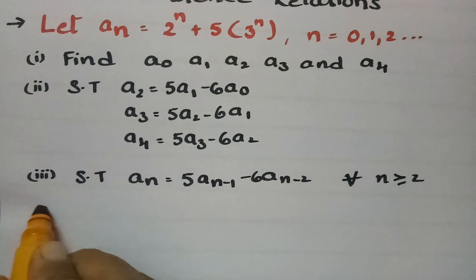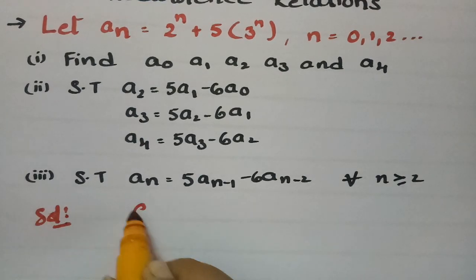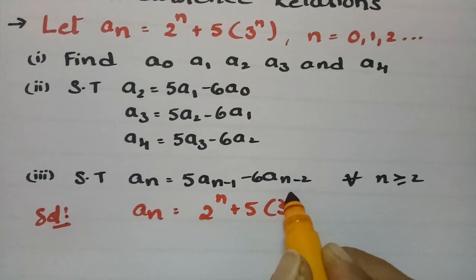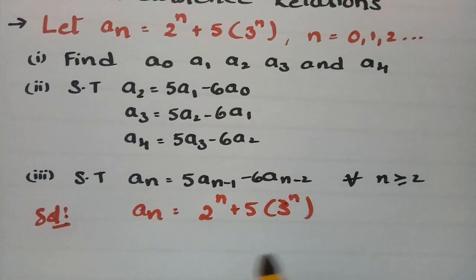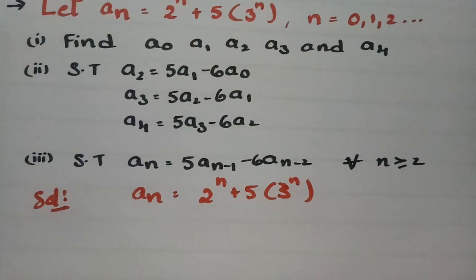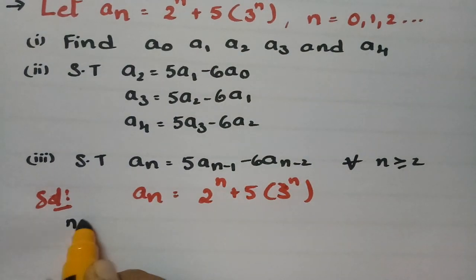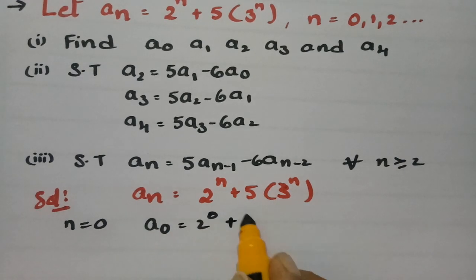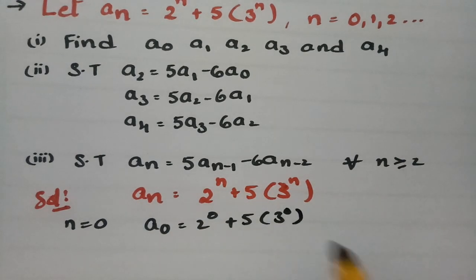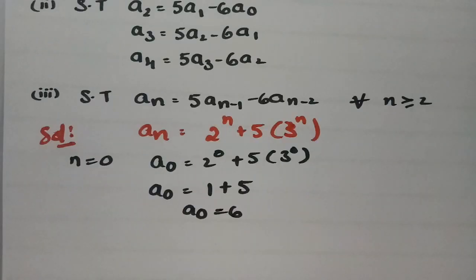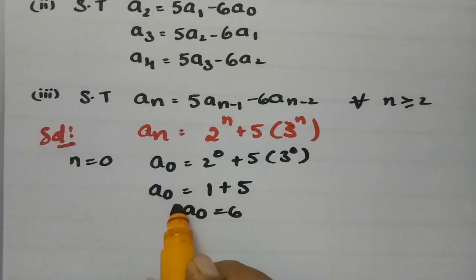According to our solution, a_n is given as 2^n plus 5 times 3^n. To find a_0, we keep n equal to 0. So a_0 equals 2^0 plus 5 times 3^0, which is 1 plus 5. So a_0 equals 6.